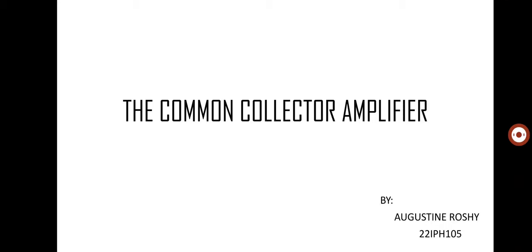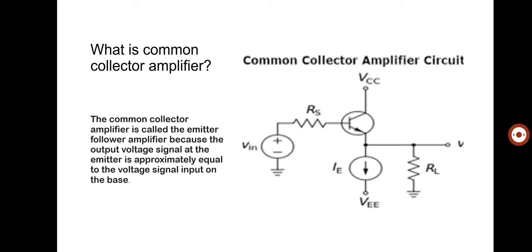Good morning friends, I am Agustin Roshi. I am here to present on the topic of the common collector amplifier. The common collector amplifier is called the emitter follower amplifier because the output voltage signal at the emitter is approximately equal to the voltage signal input on the base. The input signal through the base is equal to the output at the emitter.